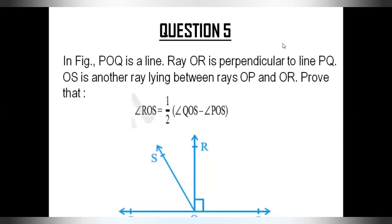Let us get into question number 5 of NCERT Exercise 6.1. The question says: in the figure, POQ is a line. Ray OR is perpendicular to line PQ. OS is another ray lying between rays OP and OR. Prove that angle ROS is equal to half of angle QOS minus angle POS.